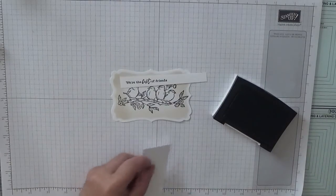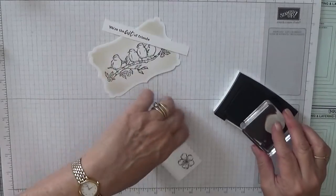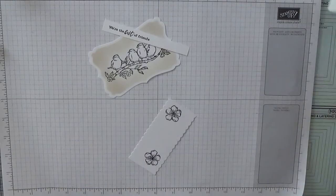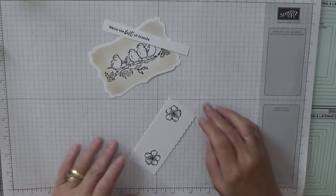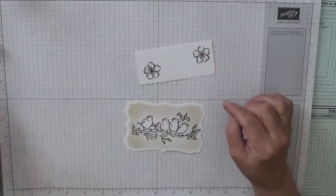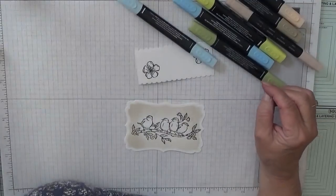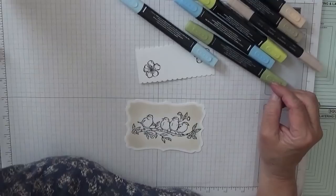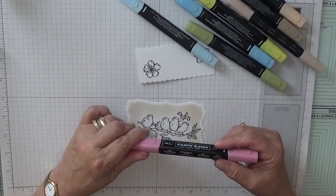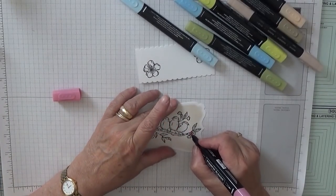And we're also going to stamp a flower. Oh I don't think that stamped well. That's it. I'll put that to one side, we need to color that. This is Rococo Rose and that's what I'm going to color the flowers in.